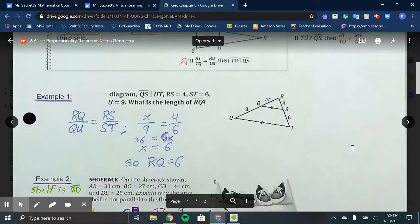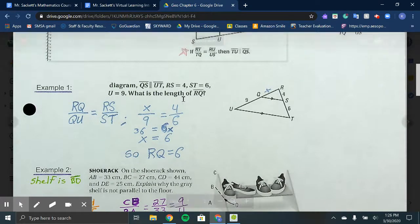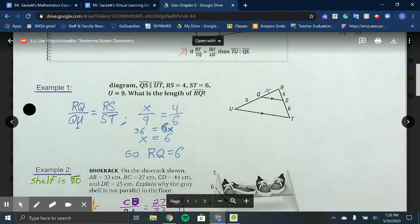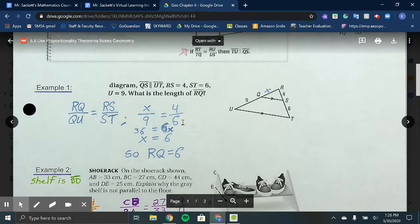Looking at Example 1, in the diagram, side QS is parallel to UT. They know the distance of RS is 4, ST is 6, and UQ is 9. What is the length of RQ? We'd set up our proportion, RQ over QU equals RS over ST. So our proportion is x over 9 equals 4 over 6.